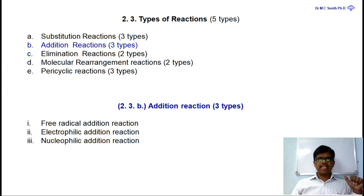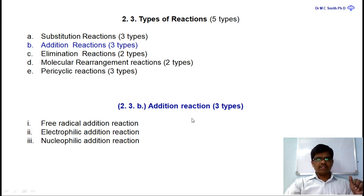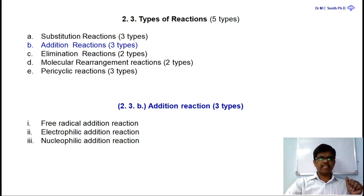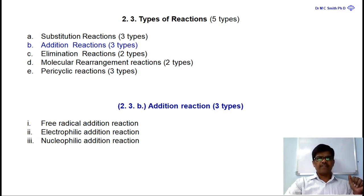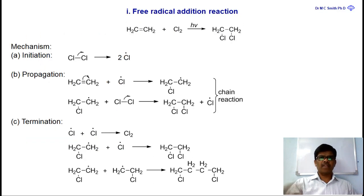Similarly, based on the reagent used, addition reactions are of three types. If we use a free radical as a reagent, then the reaction is a free radical addition reaction. If the reagent is an electrophile, then the reaction is an electrophilic addition reaction. If the reagent is a nucleophile, then the reaction is a nucleophilic addition reaction.